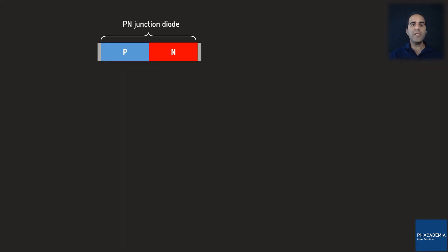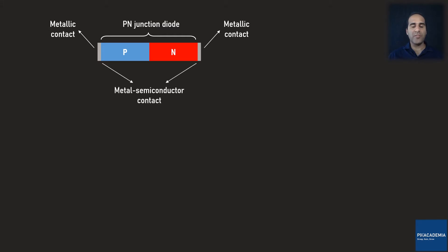In the previous lectures, we saw the ways a PN junction diode and a pin diode operate. What I did not talk about when discussing the PN junction and pin diodes was the two metallic contacts connected to the two ends of the device. In other words, I did not delve into the behavior of the metal semiconductor contacts. In this lecture, my intention is to discuss the metal semiconductor contact behavior.